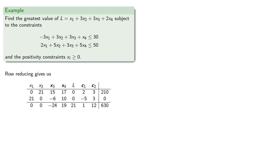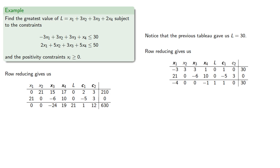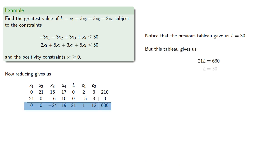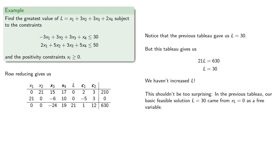Now, it might not be obvious, but an interesting thing has happened. Notice that our previous tableau gave us L equals 30. But this tableau gives us L equals 30, and we haven't increased L. This shouldn't be too surprising. In the previous tableau, our basic feasible solution L equals 30 came from x1 equals 0 as a free variable. But in this tableau, our second row gives us 21x1 equals 0, so we still have x1 equal to 0.